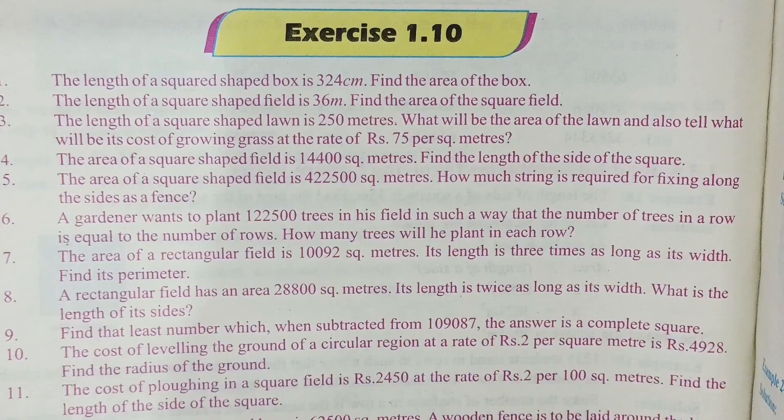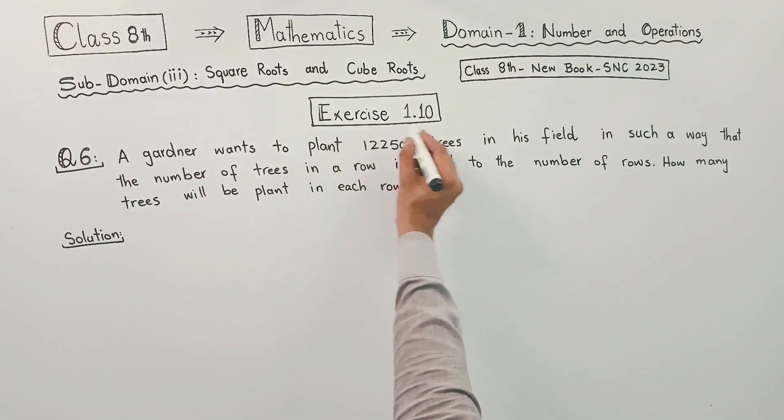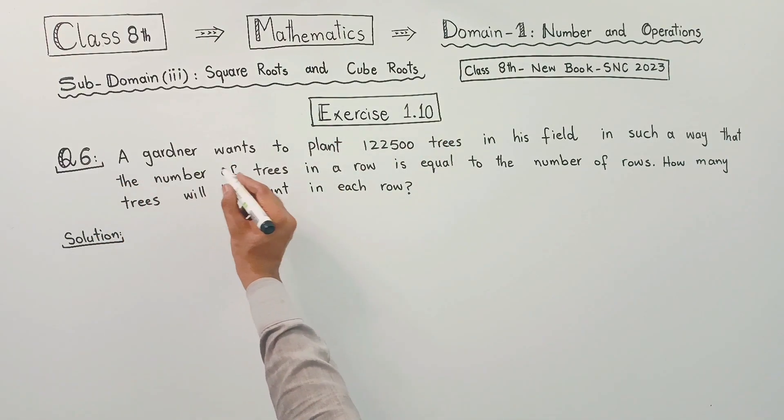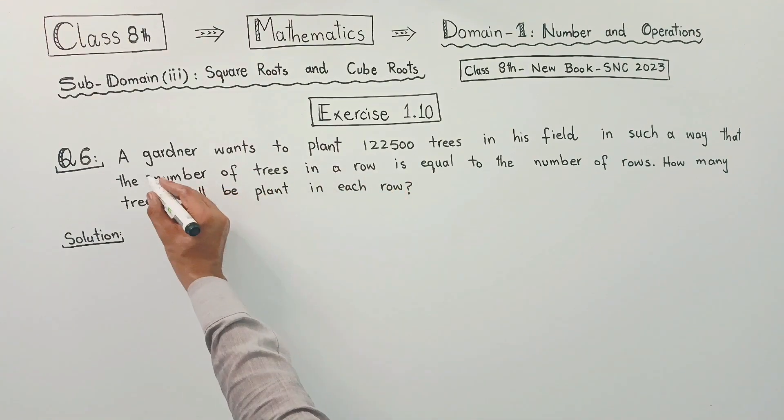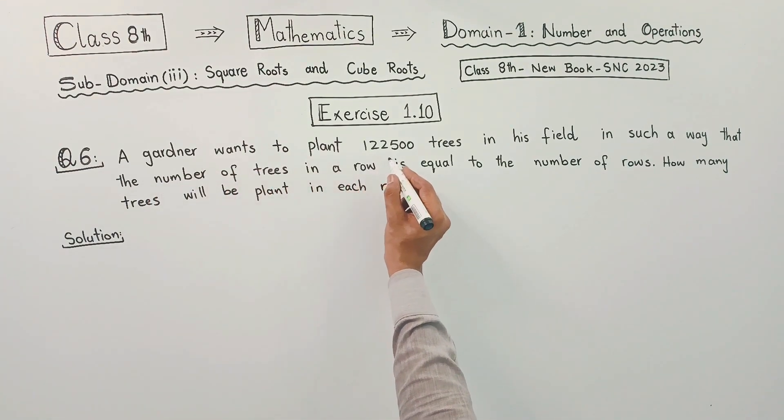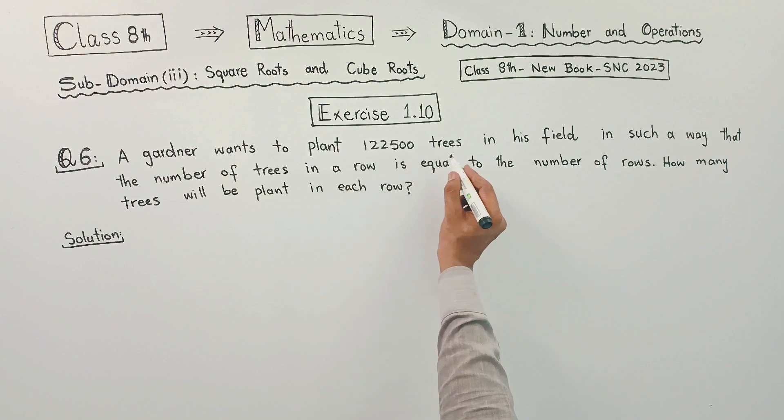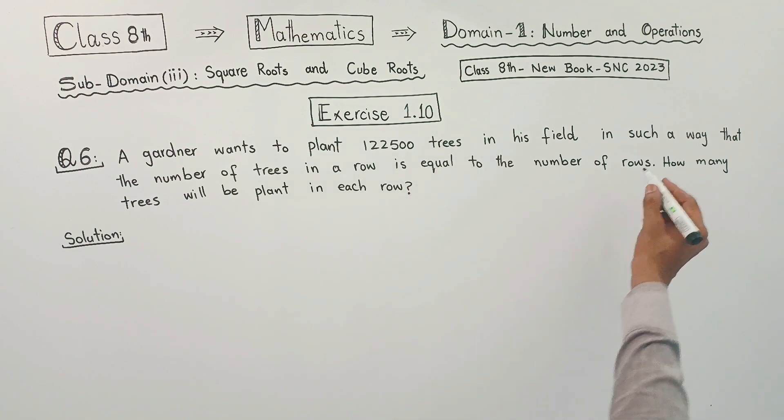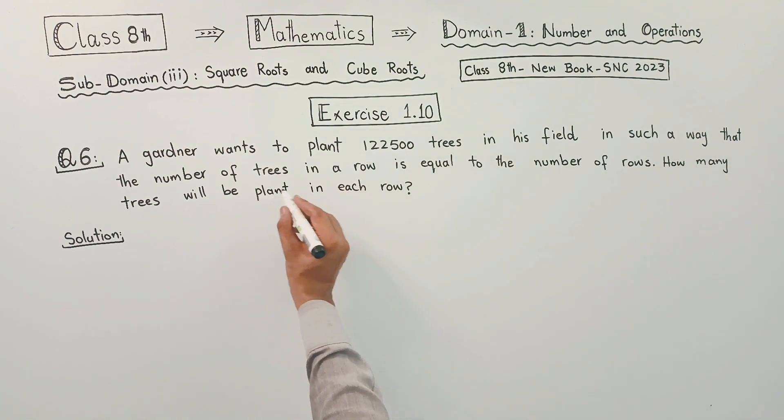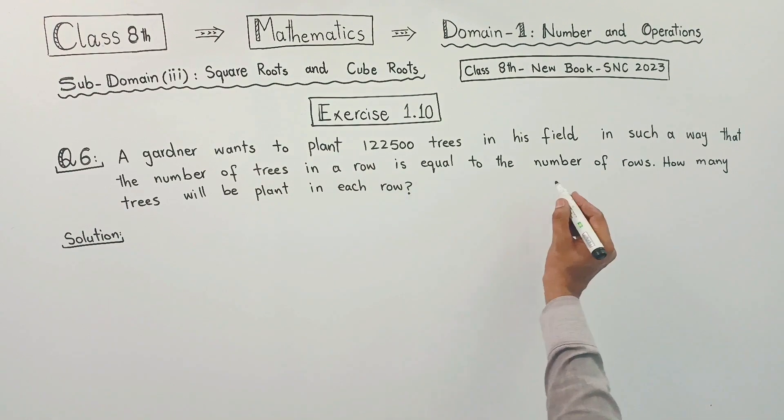So, a gardener wants to plant 1,22,500 trees in his field in such a way that the number of trees in a row is equal to the number of rows.